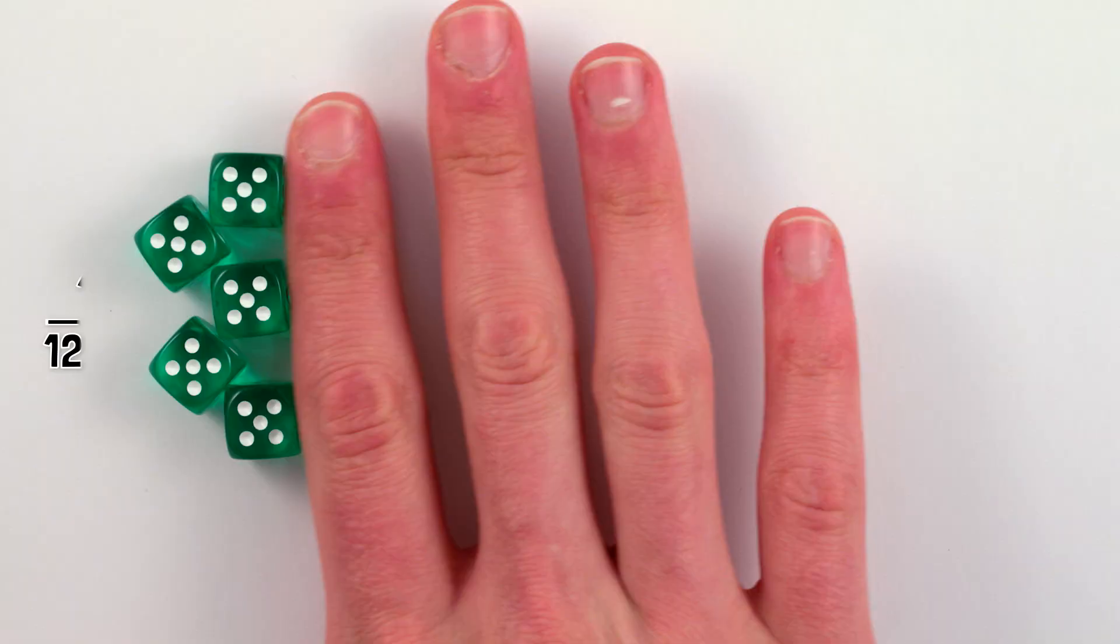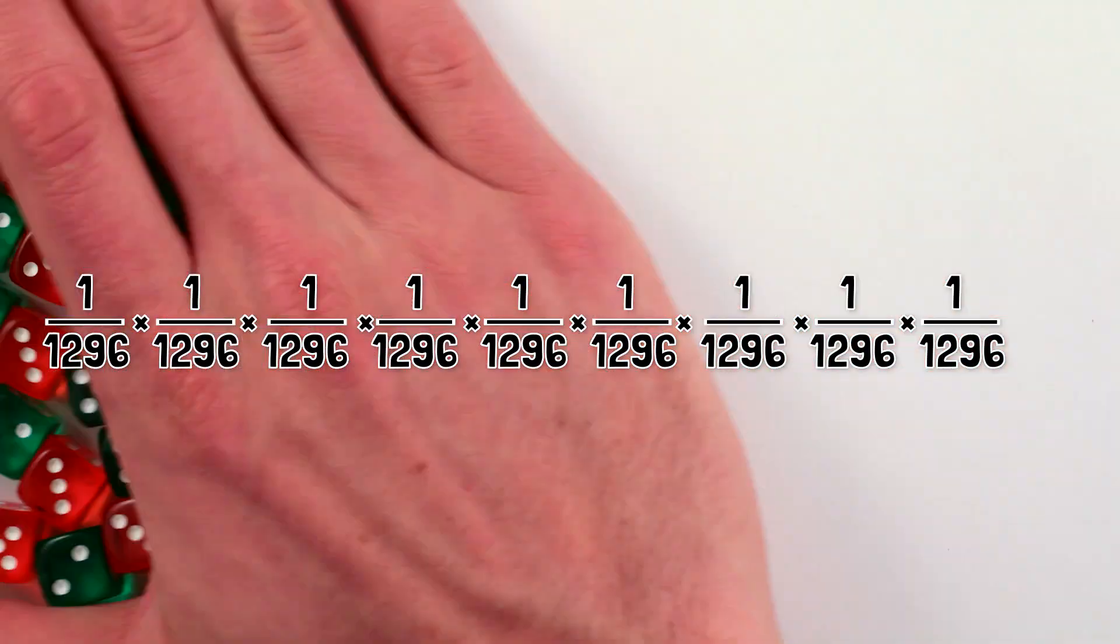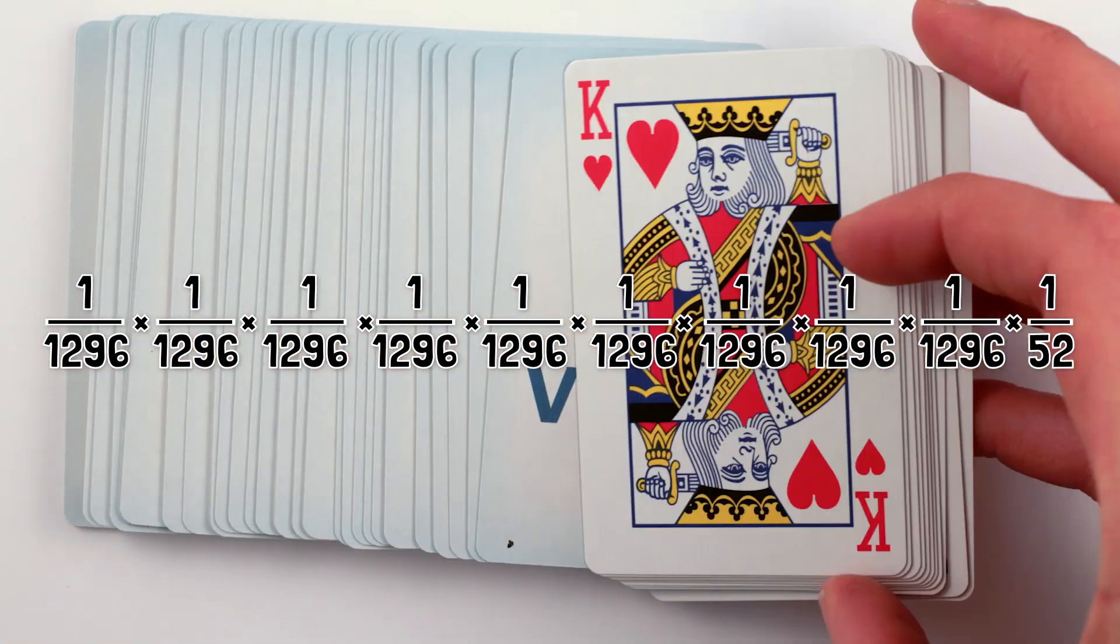Basically zero. You're more likely to roll nine one-roll yahtzees in a row and then pick the king of hearts at random out of a deck of cards.